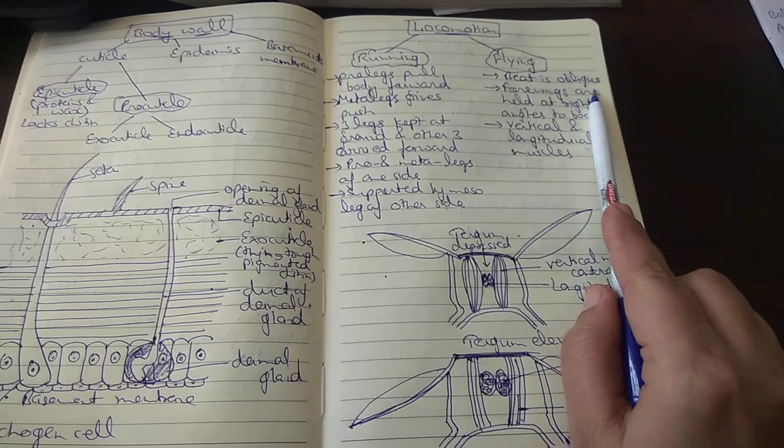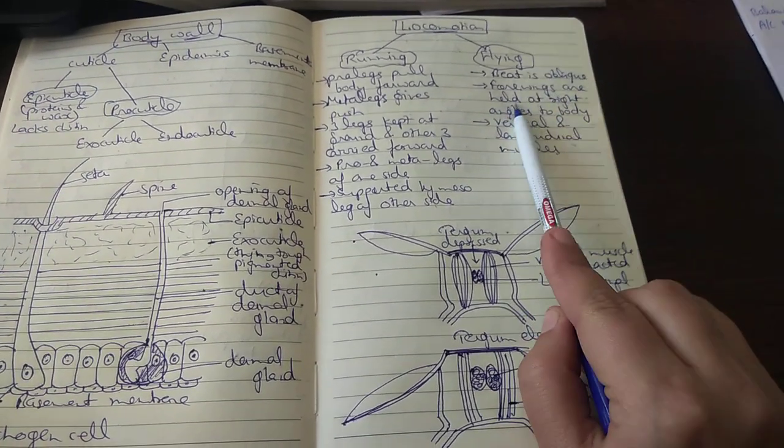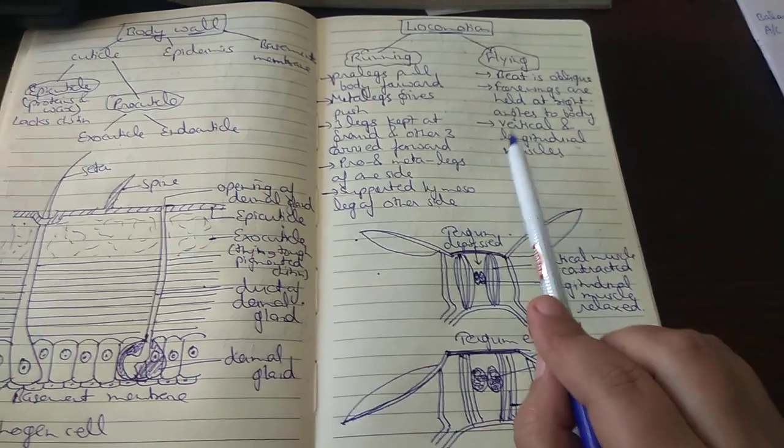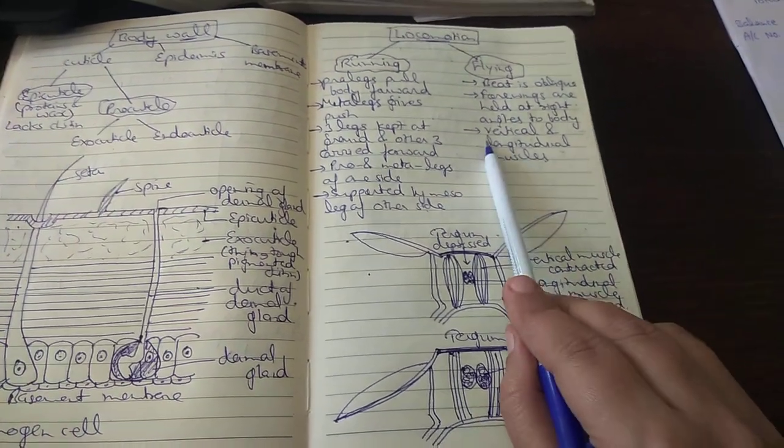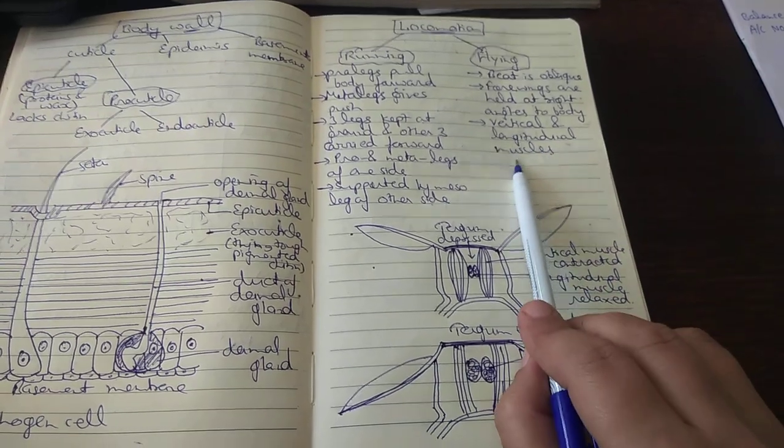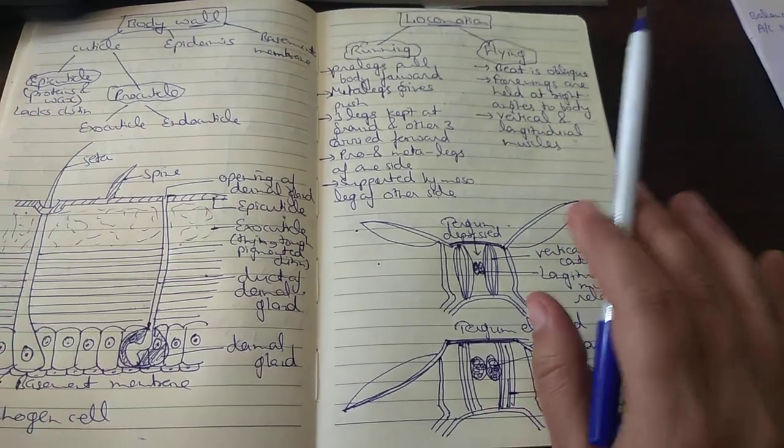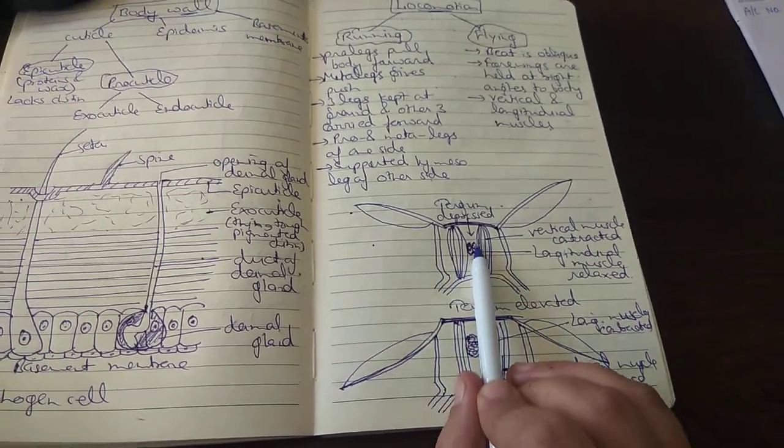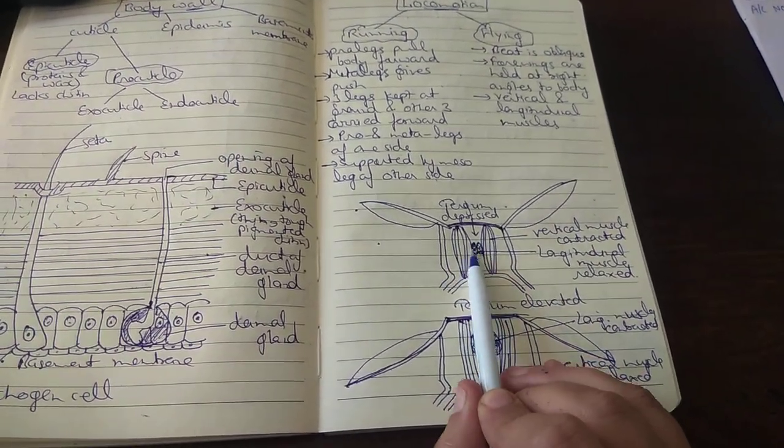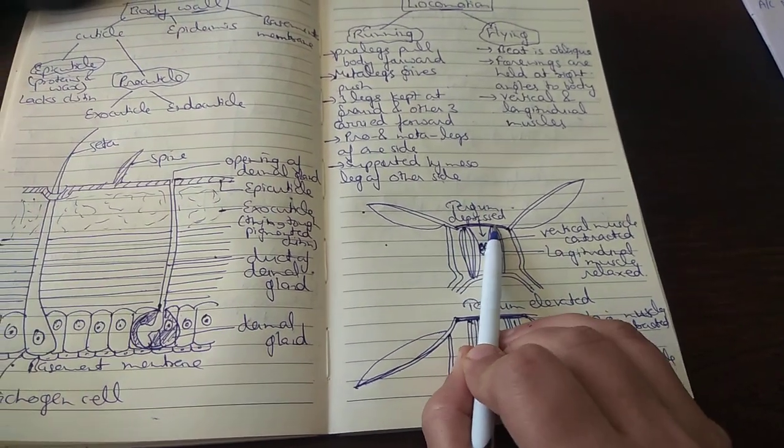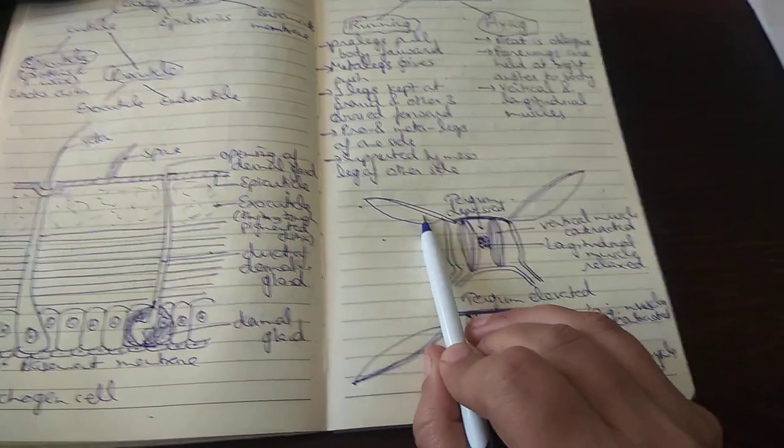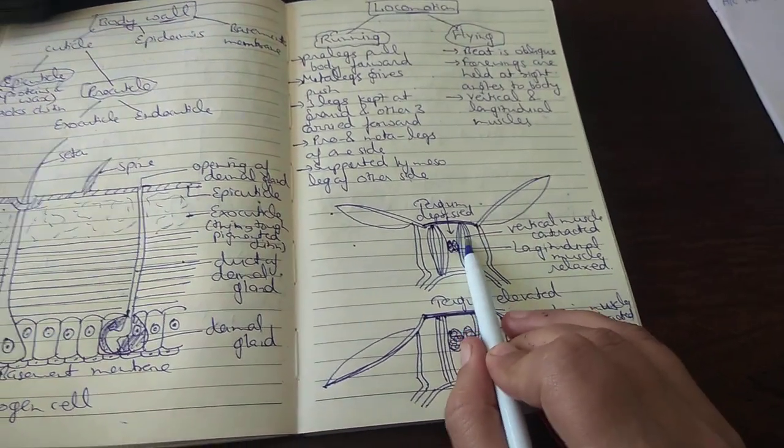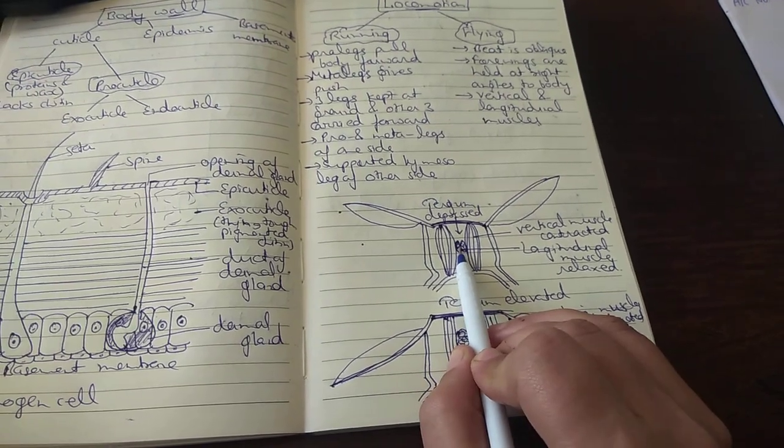The wings beat in an oblique manner. Four wings are held at right angles to the body during flight. Two muscles are responsible for flight: the vertical muscles and the longitudinal muscles. These muscles are not directly attached to the wings but are attached to the body walls. The tergum is the sclerite. When the vertical muscle contracts, the longitudinal muscle relaxes.